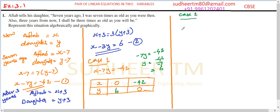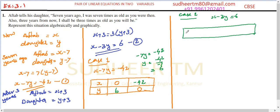Case two: equation X minus 3Y equals 6. Constructing a table: when X equals 0, then minus 3Y equals 6, so Y equals minus 2. When Y equals 0, then X equals 6. So our two points are (0, −2) and (6, 0).